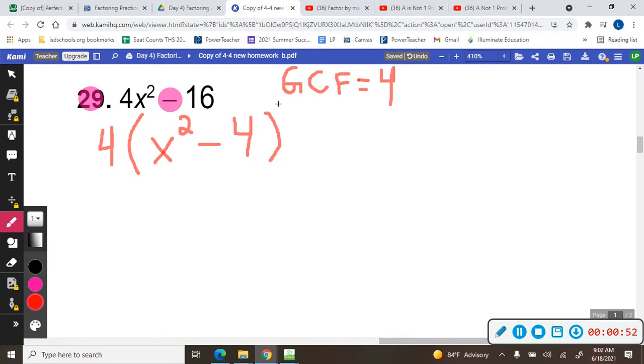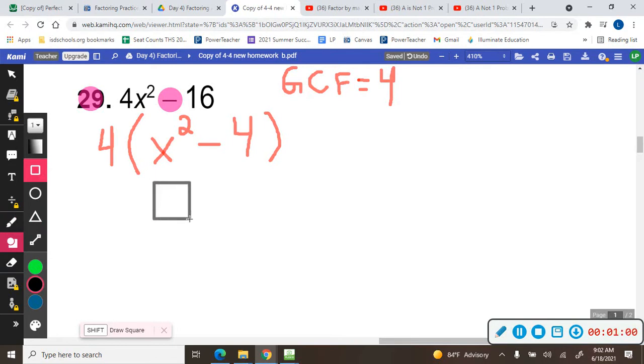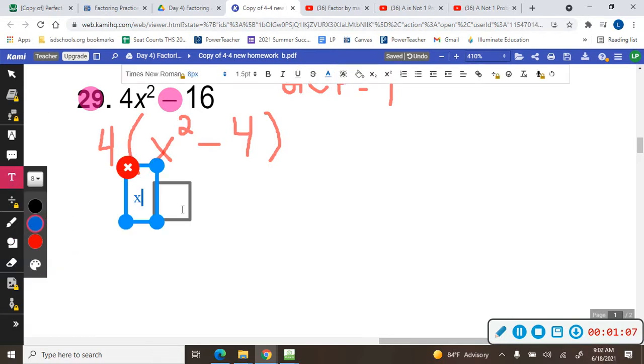And so I noticed that x² is a square. If I was to make that into a square, that'd be x and x. x times x is x².